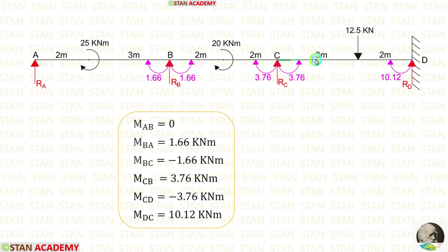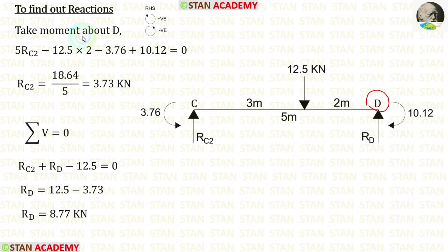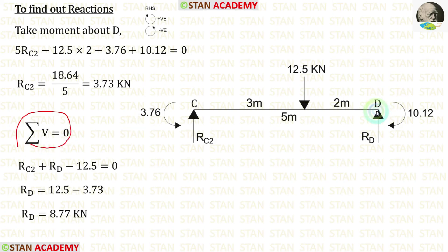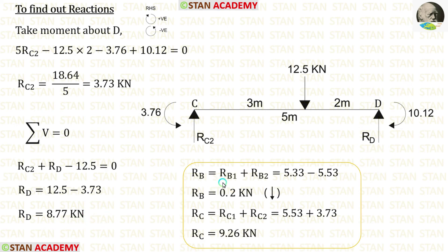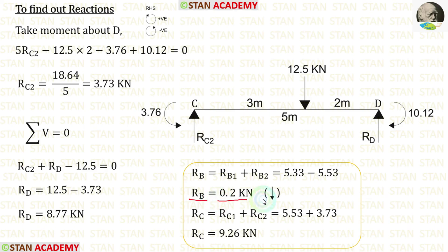For span CD, we have MCD acting anticlockwise and MDC acting clockwise. Taking moments about D, we calculate RC2 equals 3.73 kN. Using the vertical force equilibrium, RD equals 8.77 kN. At joint B, adding RB1 and RB2 gives RB equals negative 0.2 kN, meaning it acts downwards. At joint C, adding RC1 and RC2 gives RC equals 9.26 kN.